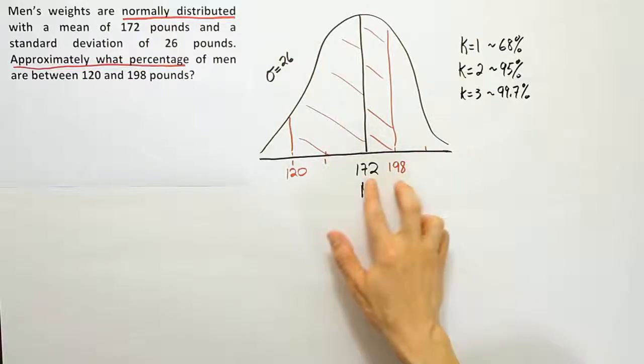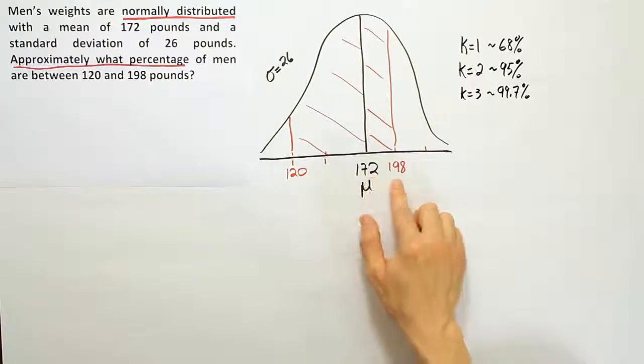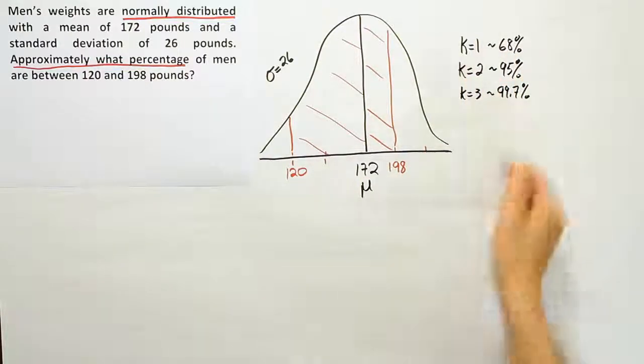Does this reflect one standard deviation above average, two, or three? That's our question. To do that we can use a formula. Let's take that 198 and plug it into this formula for k.